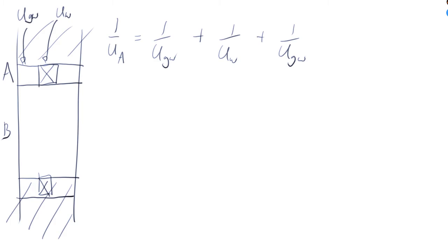And let's go back to here then. So if we put these in, 1 over U_A is going to be, oh there are two, these two are the same, so it's actually 2 over U_GW plus 1 over U_W.